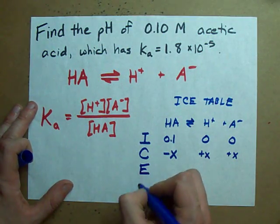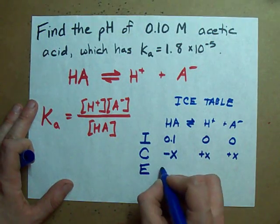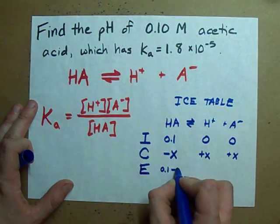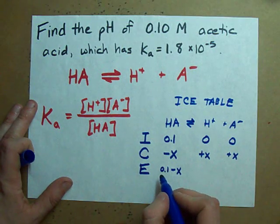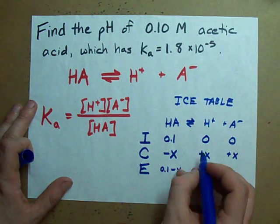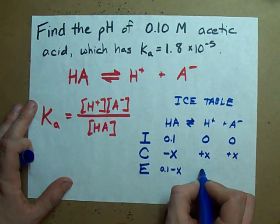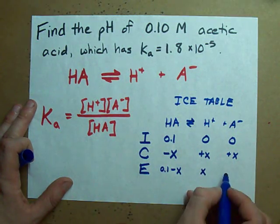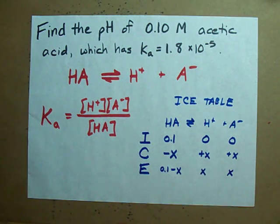Finally, what's the equilibrium concentration? Well, it's whatever we started with, with the change factored in. This will be 0.1 less some amount. This will be 0 plus some amount. And this will also be 0 plus some amount.